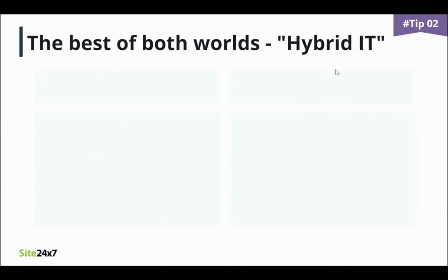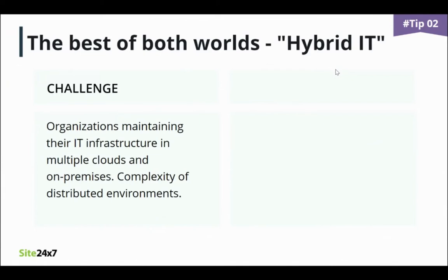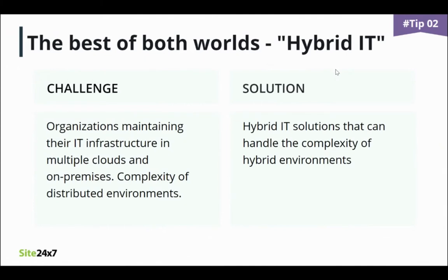The best of both worlds: hybrid IT. Configuring public and private clouds and on-premises infrastructures to work together as one hybrid platform lets companies enhance operational efficiency, break down technical barriers, optimize resource utilization, and lower overall cost of ownership. But it also adds complexity to your day-to-day network operations. You still need all your physical and virtual equipment to run smoothly 24 by 7. To monitor all your on-premises and cloud resources, you will need hybrid IT solutions that can handle the complexity of hybrid environments, ensuring high availability and performance whether it is a physical server or a VM hosted in Azure.